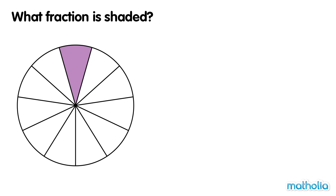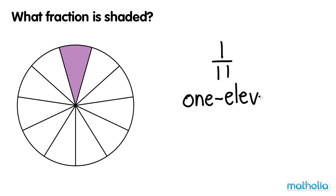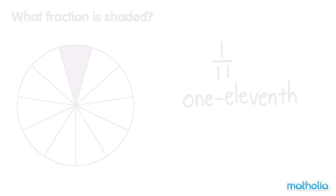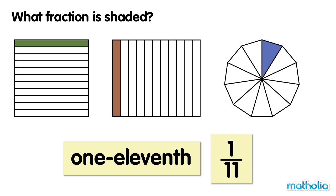This circle is divided into 11 equal parts. One part is shaded. One eleventh. One eleventh of these shapes are shaded.